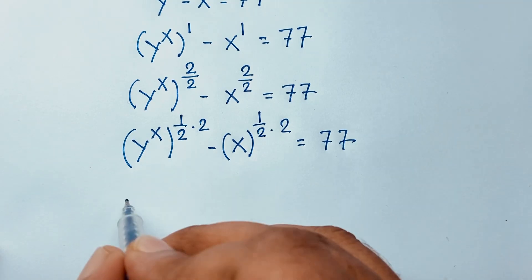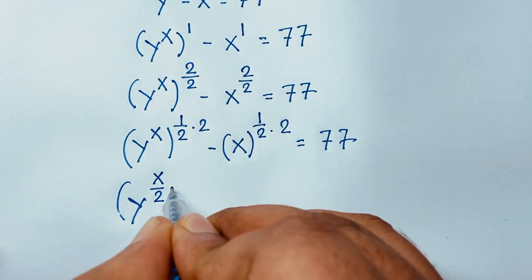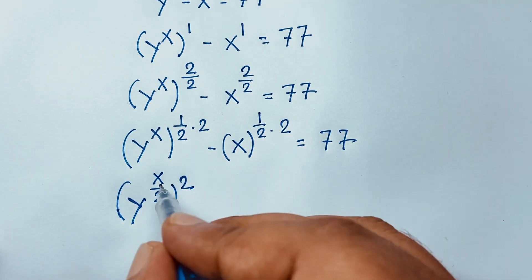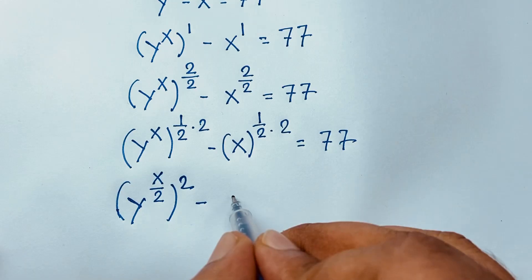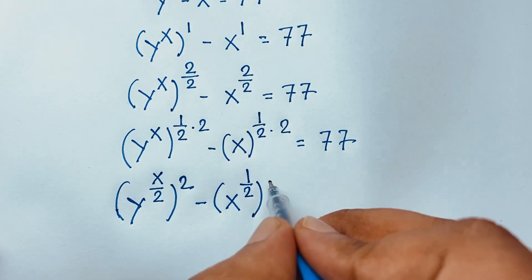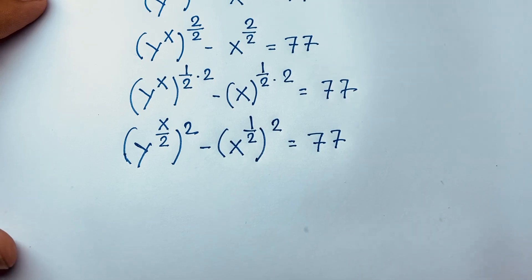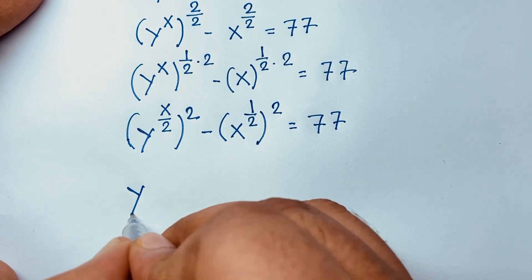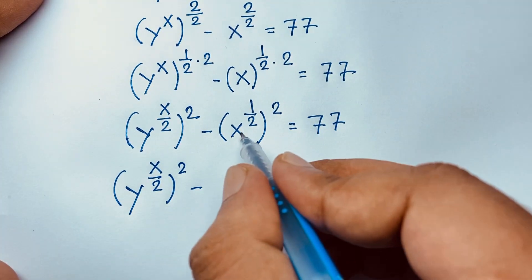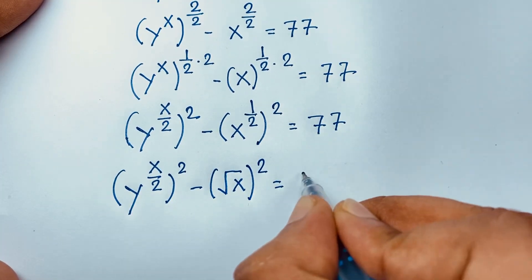I can see here y to the power x times this half, it will be x over 2, in bracket, power is 2. Using the exponential rule — i to the power n, whole to the power m — minus x to the power: I take this half and put the 2 inside the bracket, is equal to 77. Then I can see y to the power x over 2, in bracket, power 2, and x to the power 1 over 2, which is square root x, in bracket, power 2, is equal to 77.